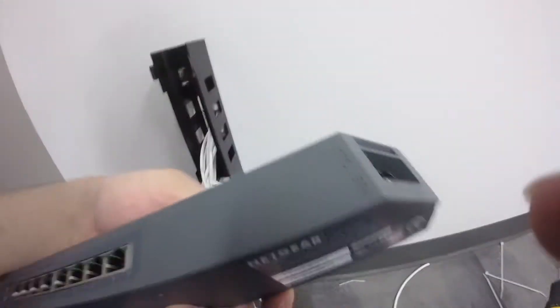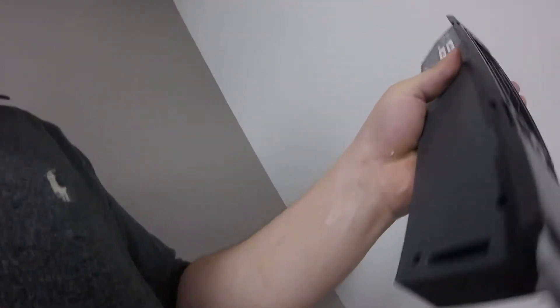I used zip-it drywall anchors and then I used some bolts. I added a third bolt because I found the panel to be a little bit wobbly with just the two bolts. The Netgear switch basically just snaps into the bracket.